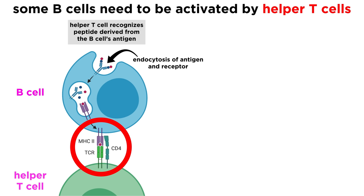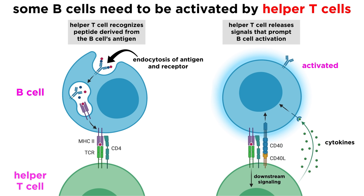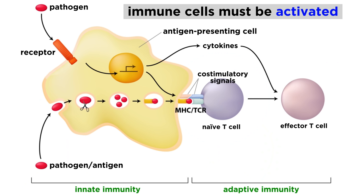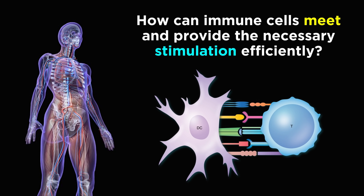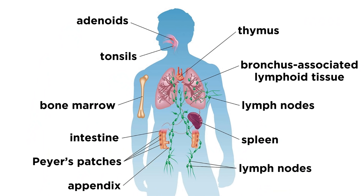To do this, B cells present their antigen to helper T cells that are specific for the same antigen, activating the helper T cell so that the T cell can in turn fully activate the B cell. Although the reliance on other cells for immune activation helps prevent inappropriate immune reactions, this requirement also poses a potential challenge. In a multicellular organism which can be made up of trillions of cells, how are two specific immune cells supposed to meet and provide each other the stimulation they require in order to carry out their respective roles in defense, and how do they do this quickly enough to protect the body from being overrun with infectious invaders?